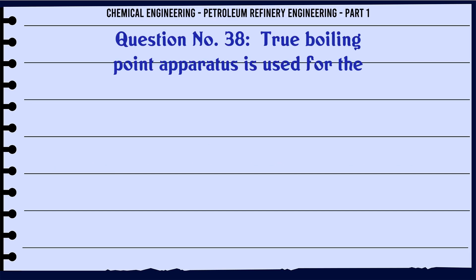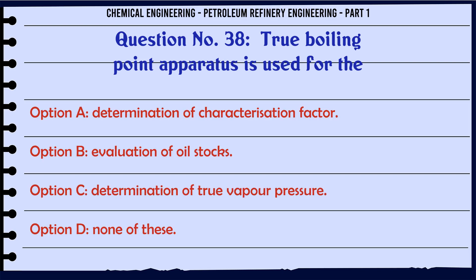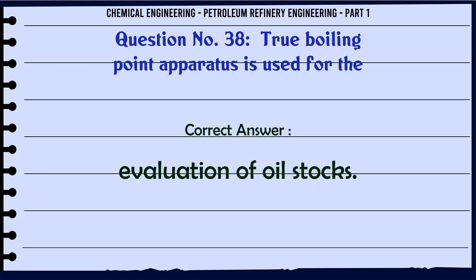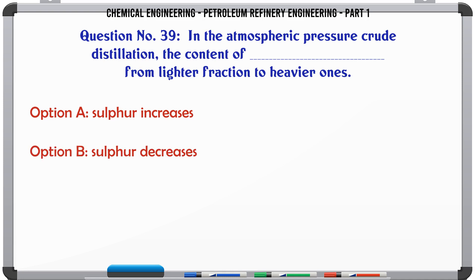True boiling point apparatus is used for the: A. Determination of characterization factor, B. Evaluation of all stocks, C. Determination of true vapor pressure, D. None of these. The correct answer is Evaluation of all stocks.